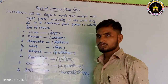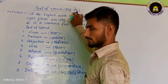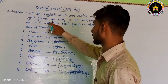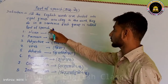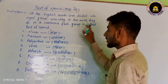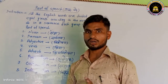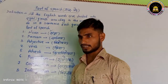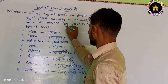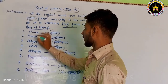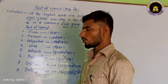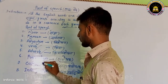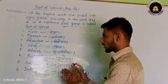What is the name of Shabd? What is the definition of Shabd? All English words are divided into groups according to the work they do in a sentence. There are 8 parts of speech: noun, pronoun, adjective, verb, adverb, preposition, conjunction, and interjection. These are our parts of speech.